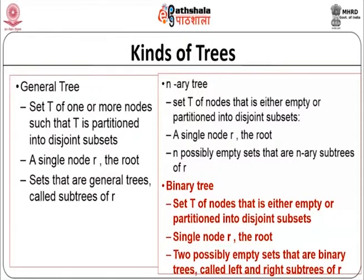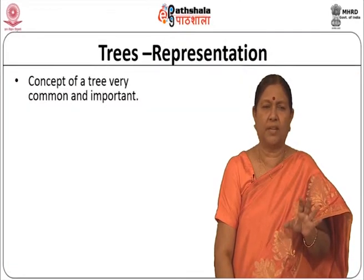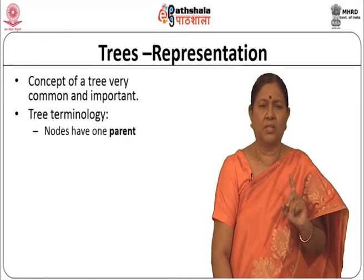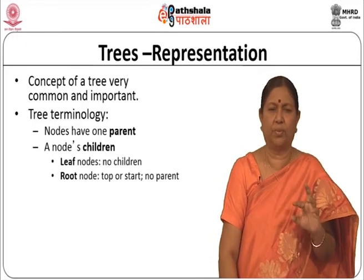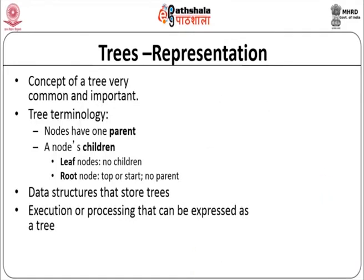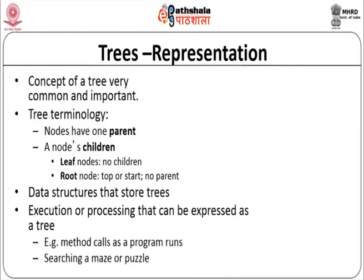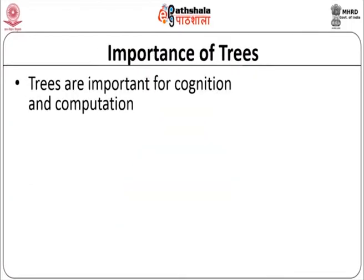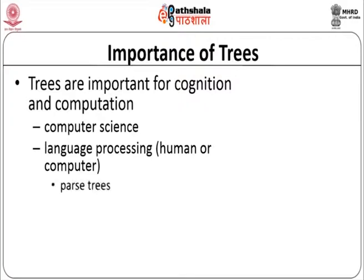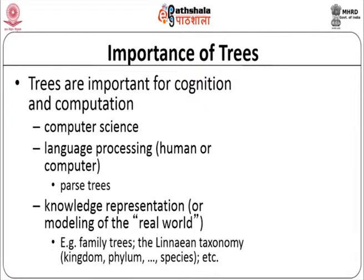Data structures that store trees are important. Execution or processing that can be expressed as a tree is also an important aspect - for example, method calls as a program runs. Searching a maze or puzzle can also be represented as a tree. Trees are very important for cognition and computation. In computer science, language processing uses parse trees, knowledge representation models the real world, and family trees, taxonomy, kingdom, species classification and so on are all important applications of trees.